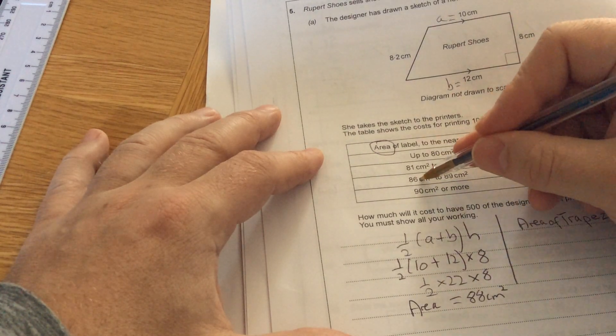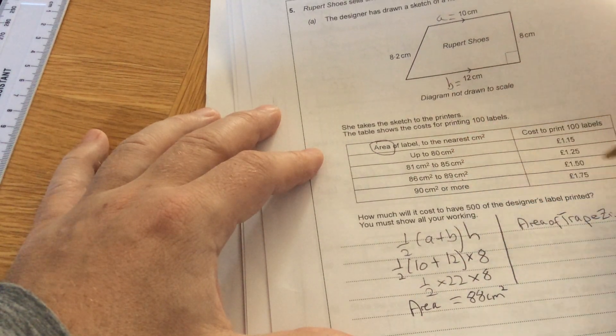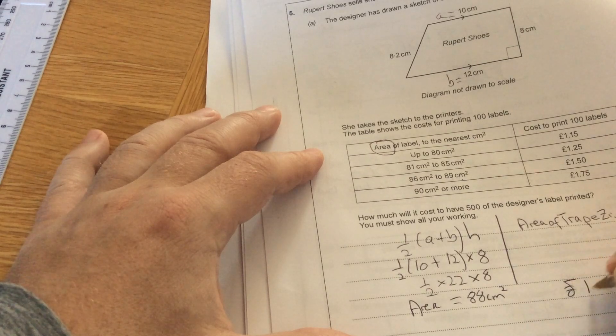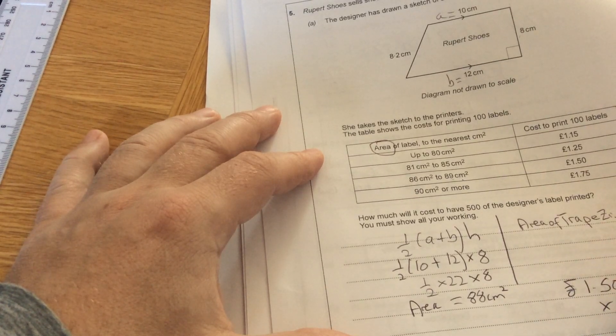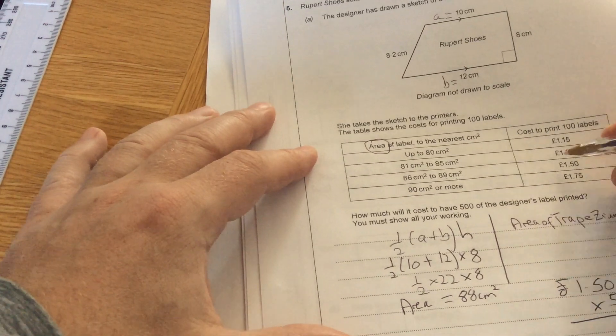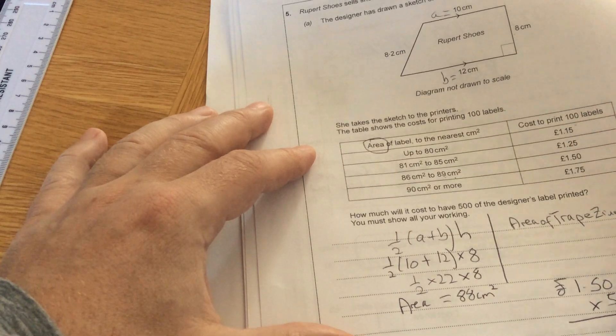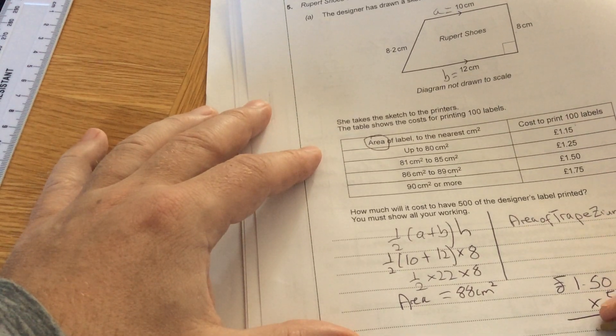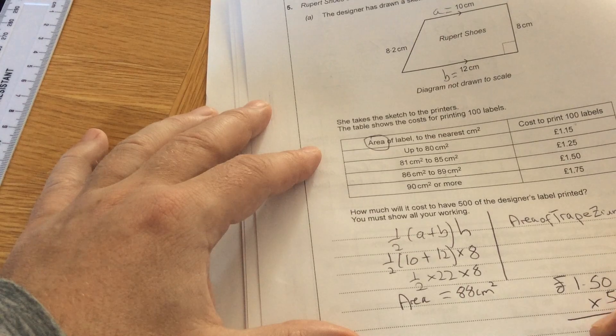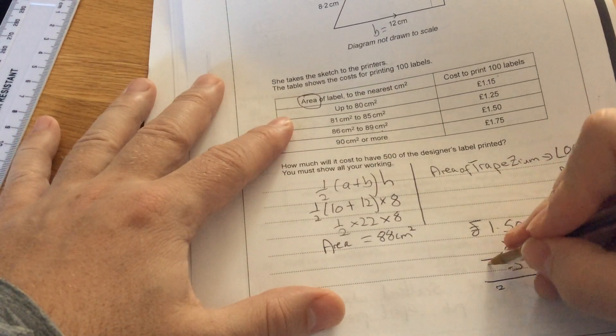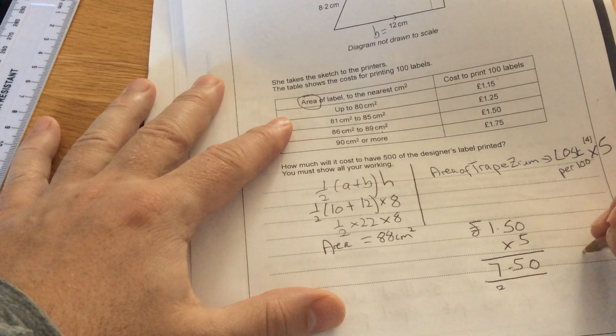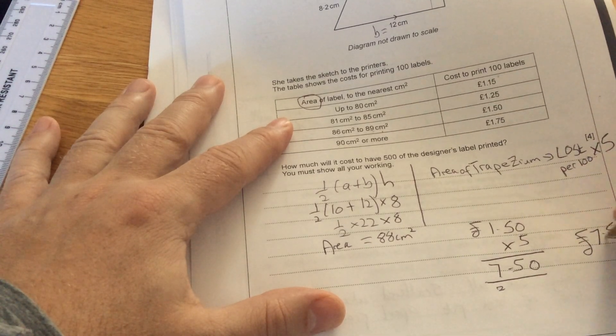So 88 is going to be between 86 and 89. So it's £1.50 per 100 labels. I'm going to times that by five because that's for a hundred labels and I need 500. Five zeros are zero, five fives are 25, carry the two, five ones are five add the two is seven. So the cost is £7.50.